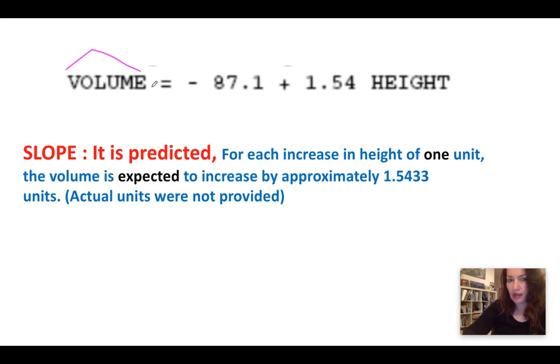Our least-square regression line is known as our predicted line. So when we interpret the slope, we want to say it is predicted for each increase in height. So right here, for each increase in height of one unit, the volume is expected to increase by approximately the slope amount. What is the slope amount? It is given to us as 1.54.